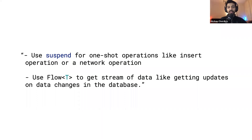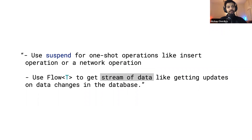You might be wondering: when to use suspend functions versus flow? Here's the rule of thumb: use suspend for one-shot operations, like inserting into a database or doing a GET/POST network request. Use flow when there's a stream of data involved — for example, getting data from a database and wanting to update the UI immediately whenever there are changes.